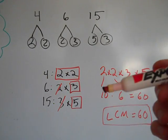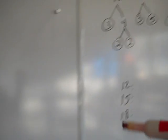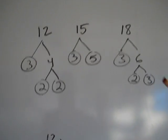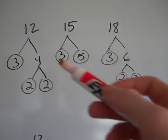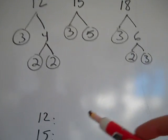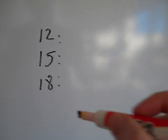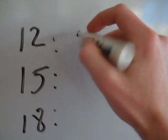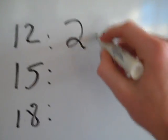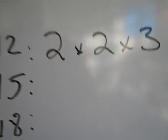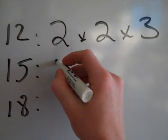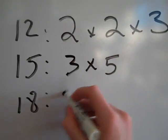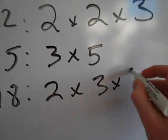I'm going to go through a couple more examples. In this next example I've already done my factor trees. I have 12, 15, and 18, already broken down into their prime factors. Now I'll list their prime factorizations: 12 is 2 times 2 times 3, 15 is 3 times 5, and 18 is 2 times 3 times 3.